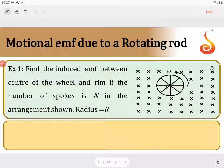Find the induced EMF between the center of the wheel and rim if the number of spokes is n in the arrangement shown. Radius is equal to r.